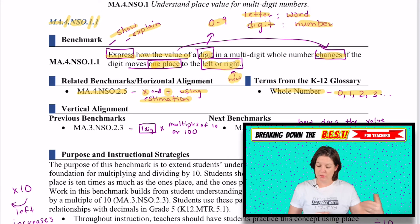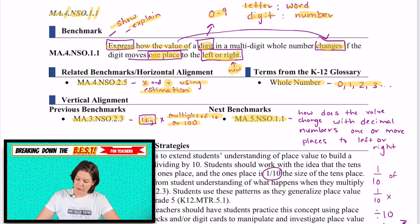I believe that students need to know what a digit is, and what value is, and what the different place names are. So there are more keywords that they need to pay attention to, but they're pointing out in this document that whole numbers are going to be important. Where are they coming from in third grade? They're coming from MA.3.NSO.2.3. And that's where we're multiplying one digit times multiples of 10 or 100, just showing how the value can increase when we have one digit multiplying it by 10. And then in fifth grade, where they're going is how does the value change with decimal numbers, one or more places to the left or to the right.